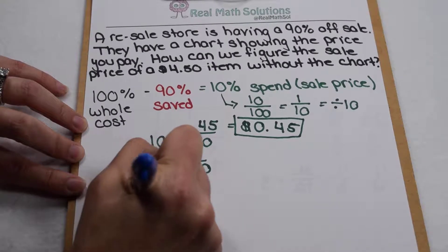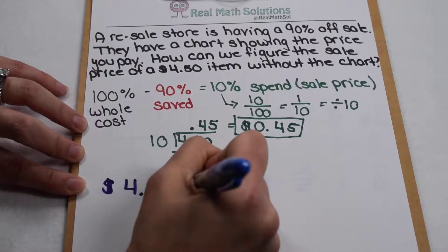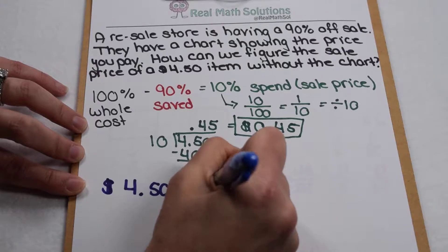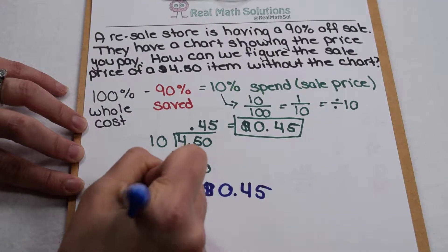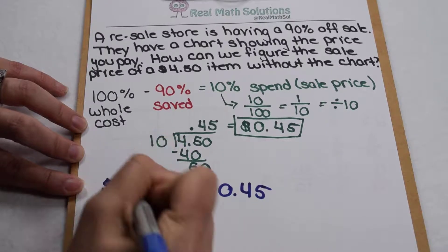If I start with 450 and I know I'm going to end up with 45 cents, my decimal point needs to move one place to the left.